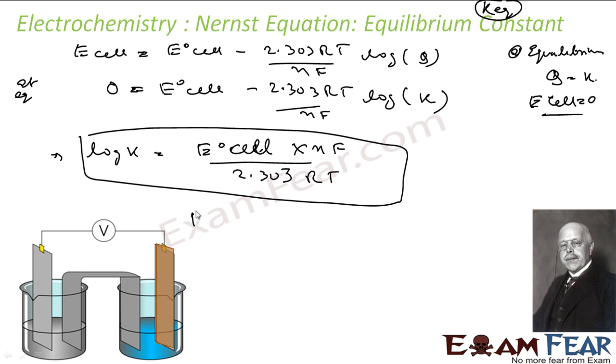For Daniel cell, let us find this. Log K is equal to E° cell, we know is 1.1 V for Daniel cell, N is 2 electrons, F we know is 96487 C by 2.303, R we know is 8.314, and T is 298 Kelvin. Let us assume normal temperature. We solve this, you get the value of K: 10 to the power 37.